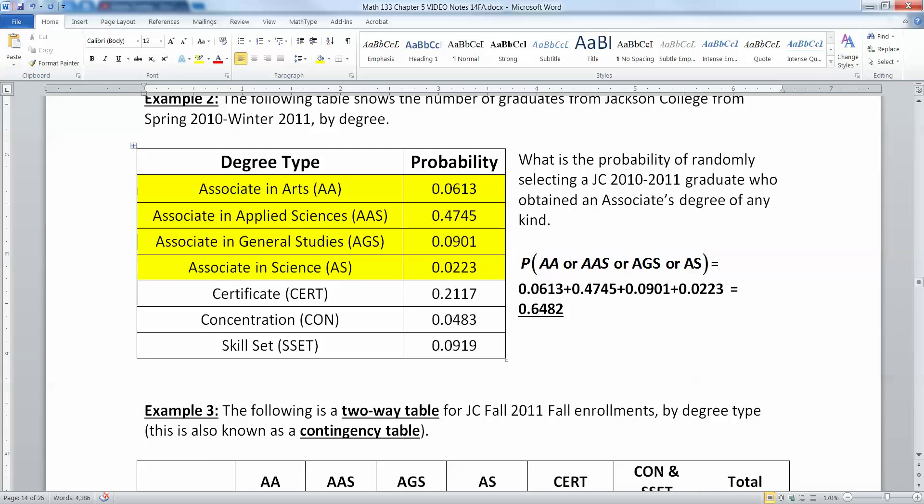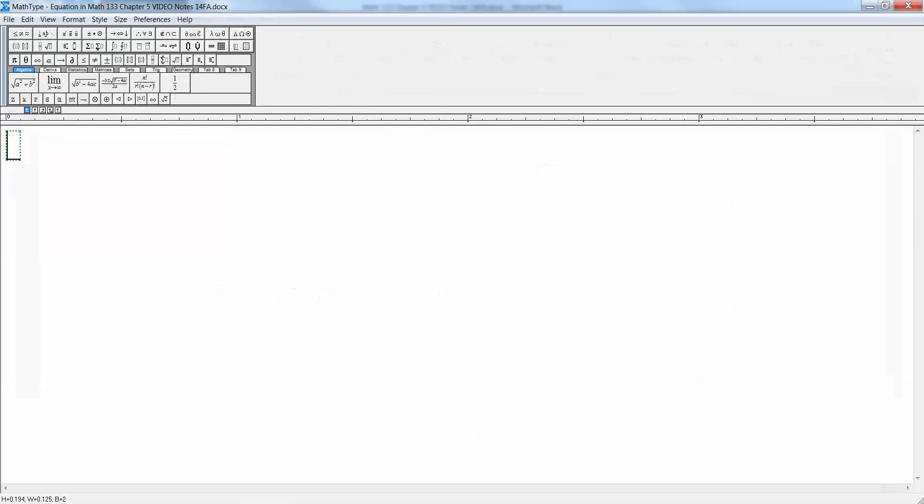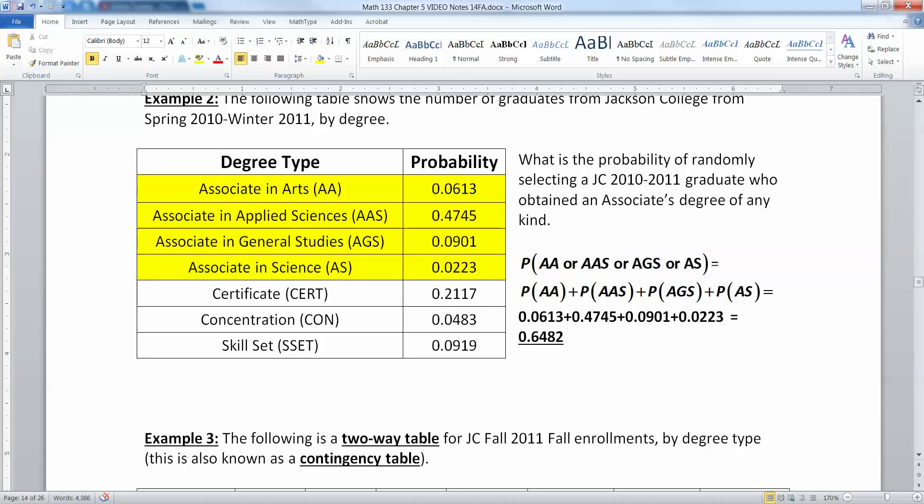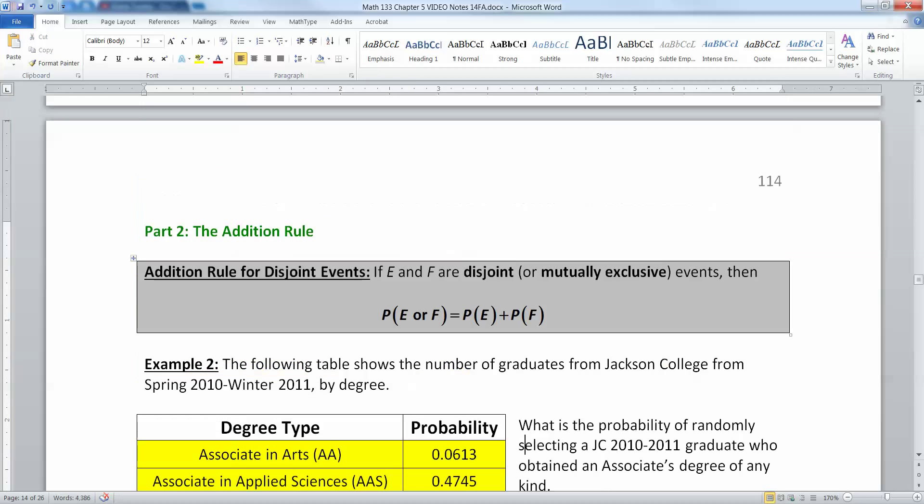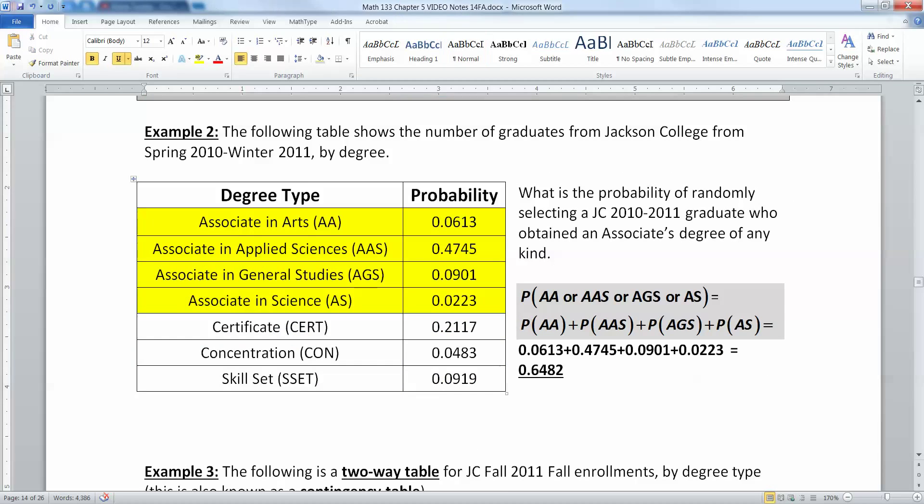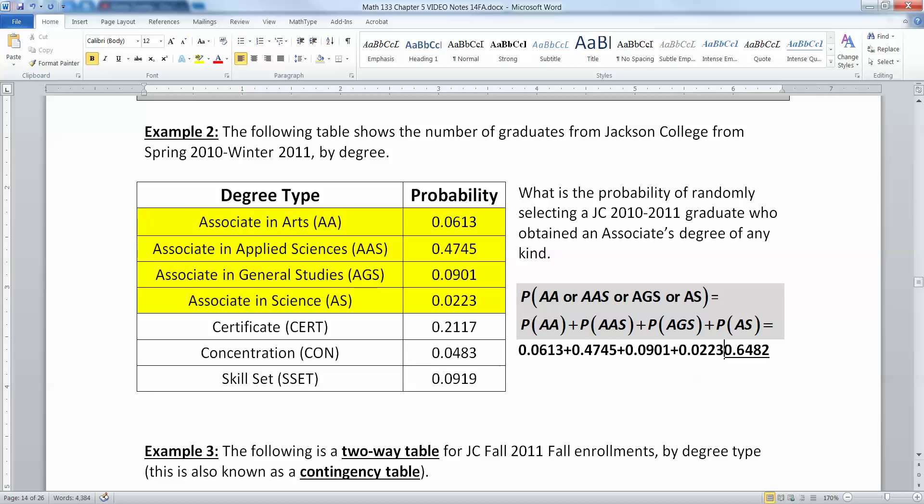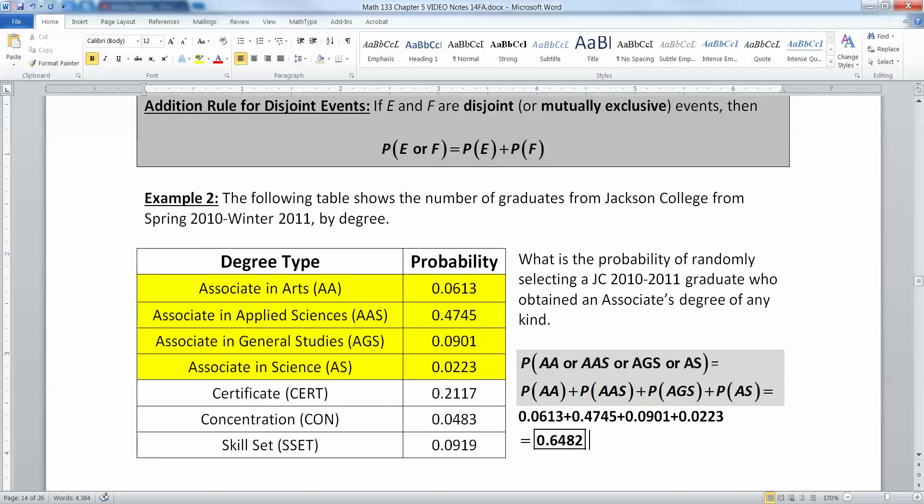To find the probability of getting an associate's degree, you would just use this rule and add up. That's the probability of AA associate in arts plus the probability of AAS plus the probability of AGS plus the probability of AS. So it's either AA or AAS or AGS or AS. So you want to find the probability of each one of those and add them up. This part here is the rule from up above. I'm just doing it for a whole bunch of degrees instead of just two. And then I find all the numbers from the table and I just add them up and I will get 0.6482 to be my final result.